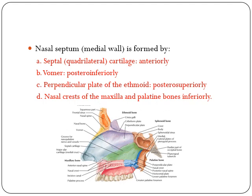The nasal septum, or the medial wall, is formed by the septal quadrilateral cartilage anteriorly, the vomer posteriorly, the perpendicular plate of the ethmoid bone posteriorly, and the nasal crest of the maxilla and the palatine bone inferiorly.